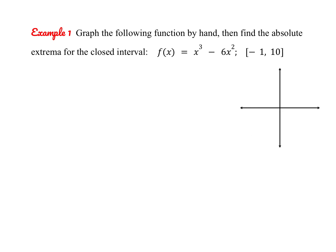Let's try this first example together. We're going to sketch a graph of the function f of x equals x cubed minus 6x squared over a closed interval and find the absolute extrema. It's helpful to factor as x squared times (x minus 6), which gives zeros at x equals zero and x equals six. The endpoints are at x equals negative 1 and x equals 10. Note that x equals zero is a double root with multiplicity 2, so the graph touches and turns there.